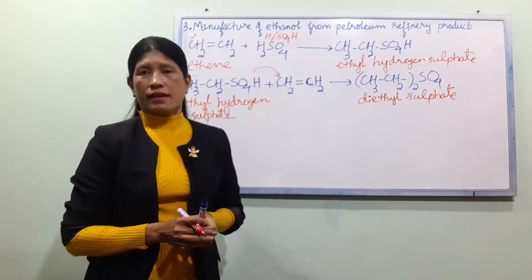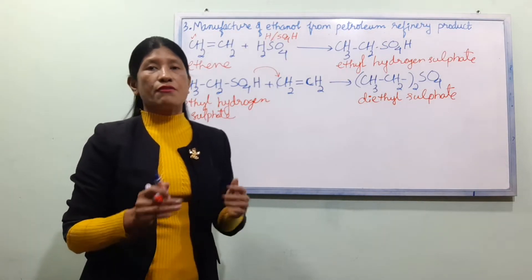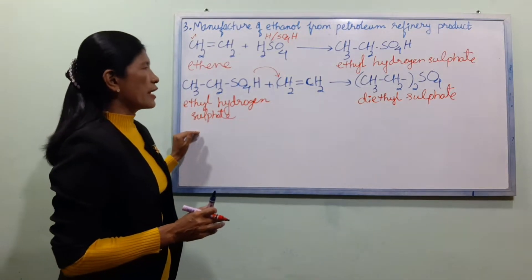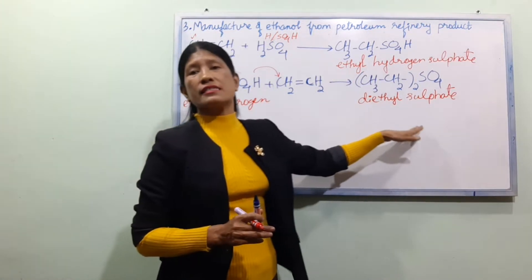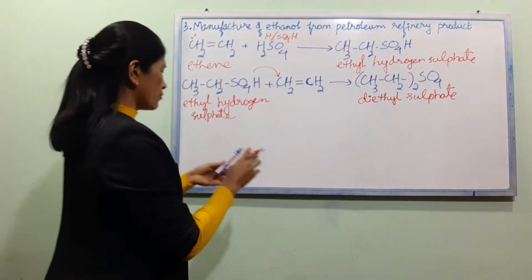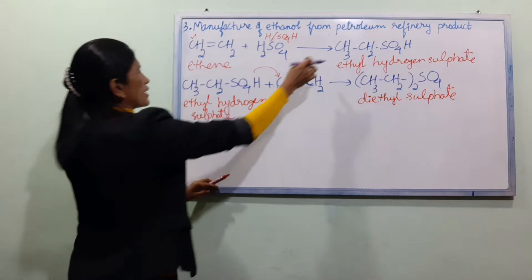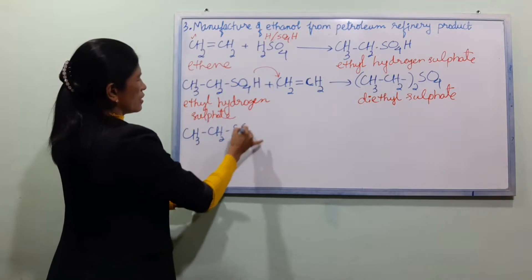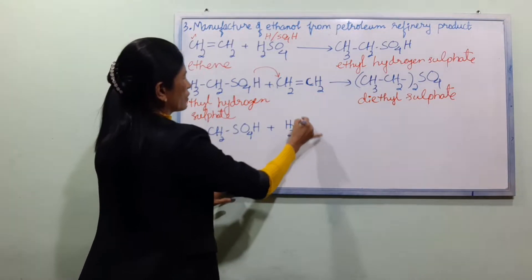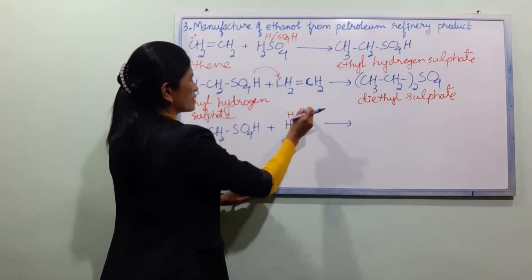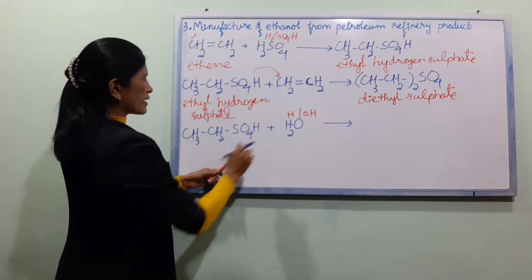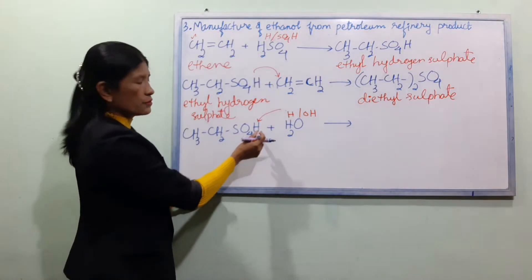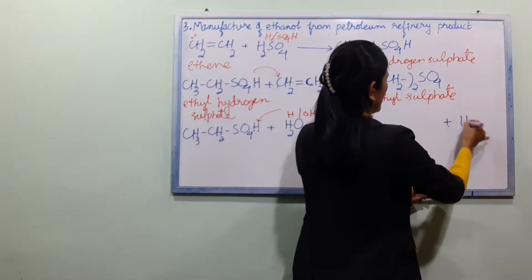When ethyl hydrogen sulfate undergoes hydrolysis, it will take water and give a product. You can see: CH3CH2SO4H plus H2O. H2O is available. So H2SO4 is regenerated and we will have ethanol.